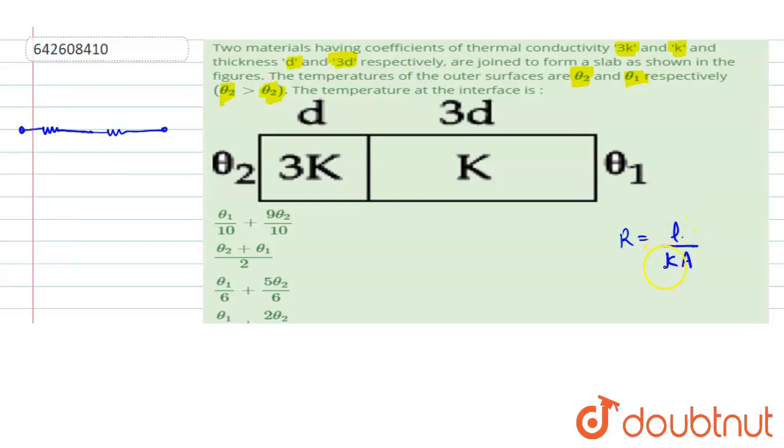As we know thermal resistance is given by L upon Ka. L is the length, K is the thermal conductivity and A is the cross-section area. The left end is at temperature theta2 and the right end is at temperature theta1.